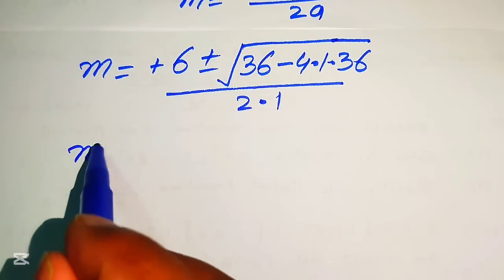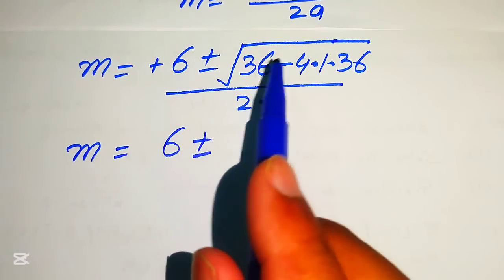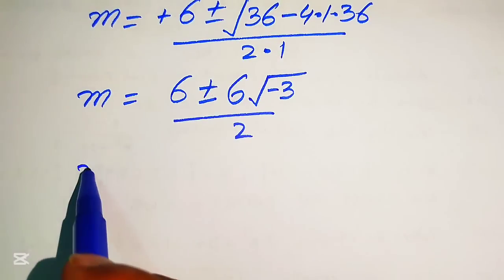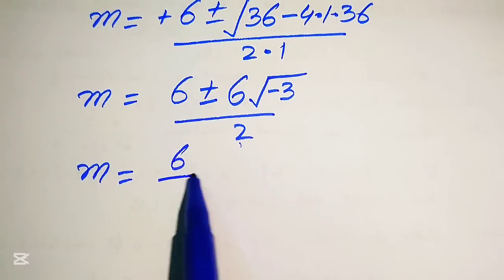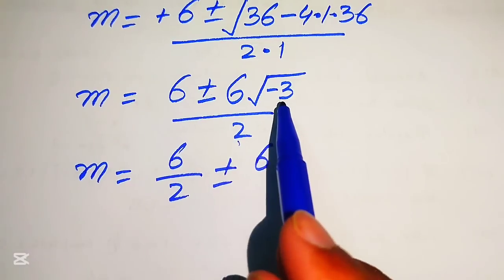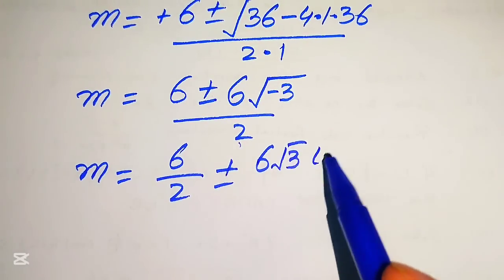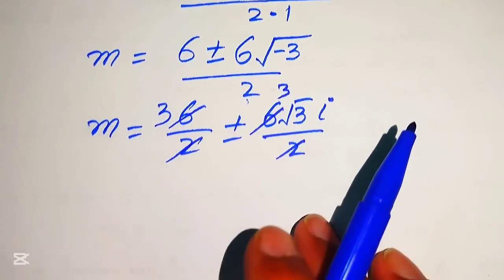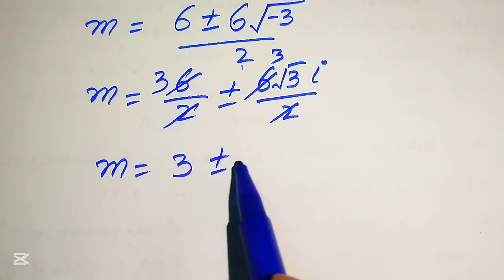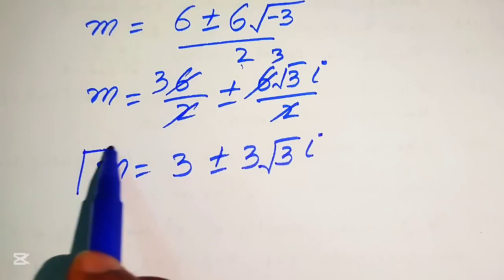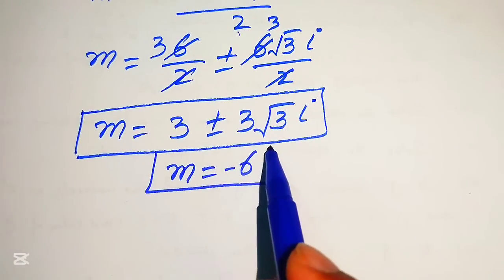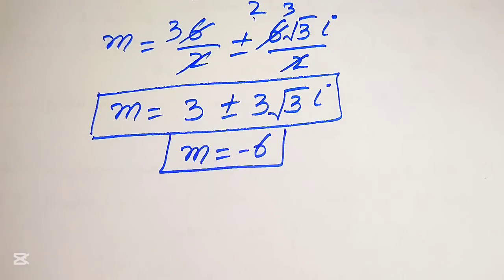Substituting the values: since b is minus 6, minus b becomes plus 6. We get 6 plus or minus square root of 36 minus 4 times 36, divided by 2. Taking 36 common gives square root of 36 times 1 minus 4, and square root of 36 is 6, while 1 minus 4 gives minus 3, so we get square root of 3 times i. Breaking the fraction gives 3 plus or minus 3 times square root of 3 i. These are the final two complex roots from equation 2. In total we have found all six roots, and this is the final answer. Thank you for watching — please subscribe to my channel for more exciting videos.